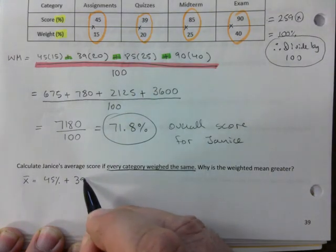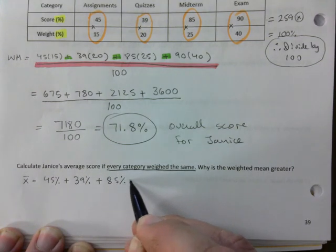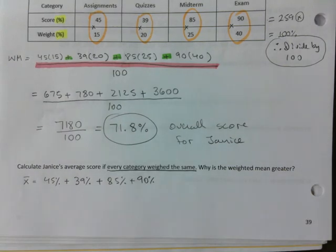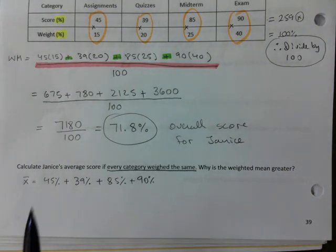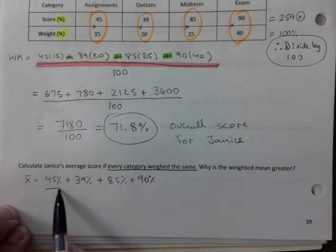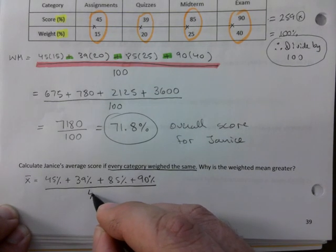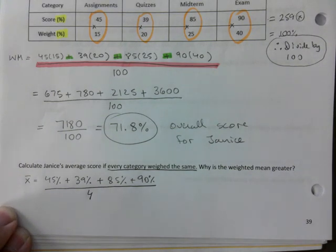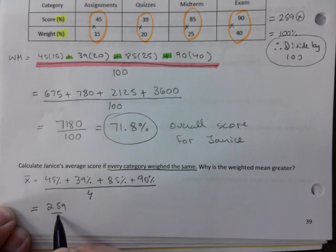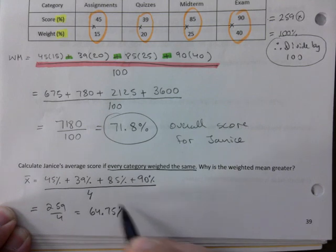I'm going to take the score for quizzes. I'm going to take the score for midterm. And the final exam. Notice that there's nothing multiplying them. They all weigh the same. You doing your assignment weighs the same thing as the exam. So all we would do here is divide it by. We added up four scores, so we're going to divide this by four. That ends up being 259 divided by four, which is 64.75%.